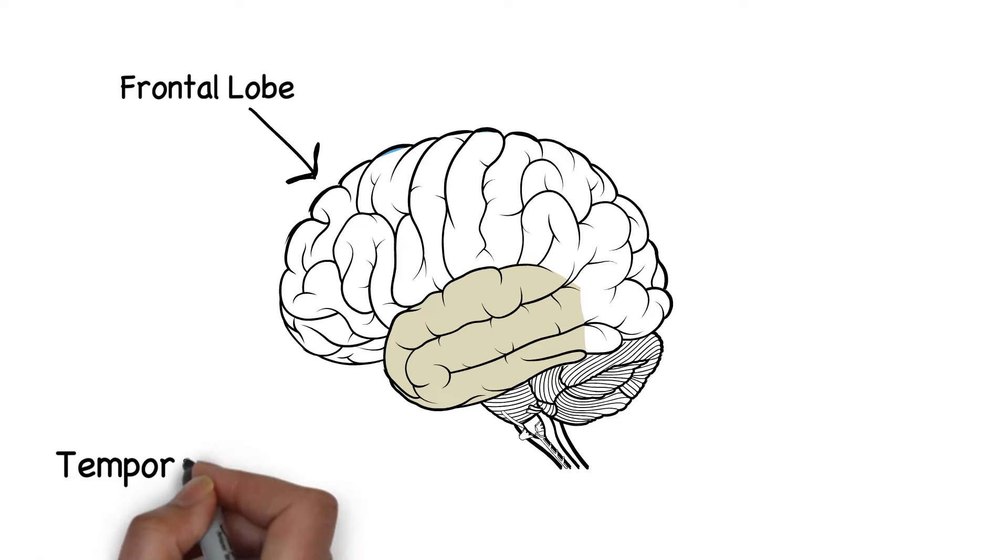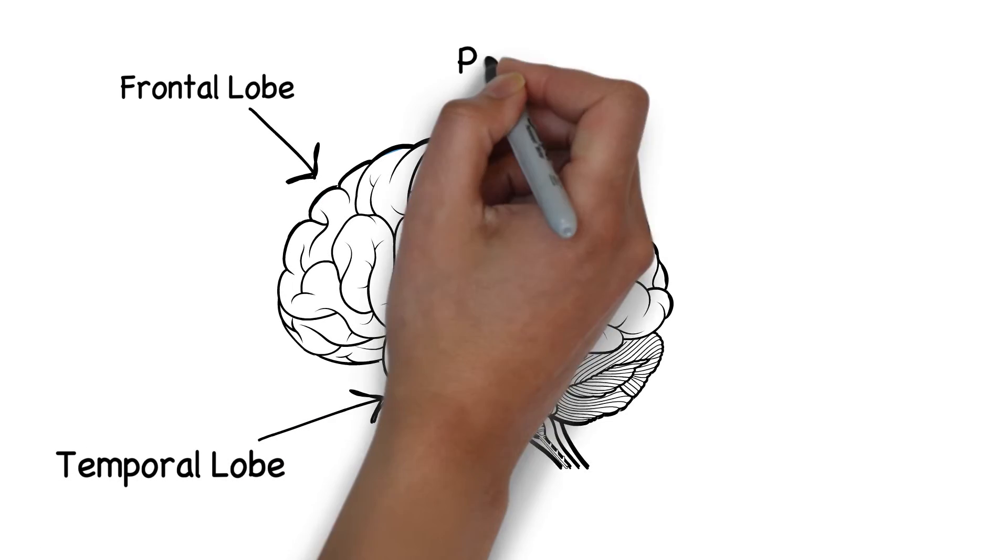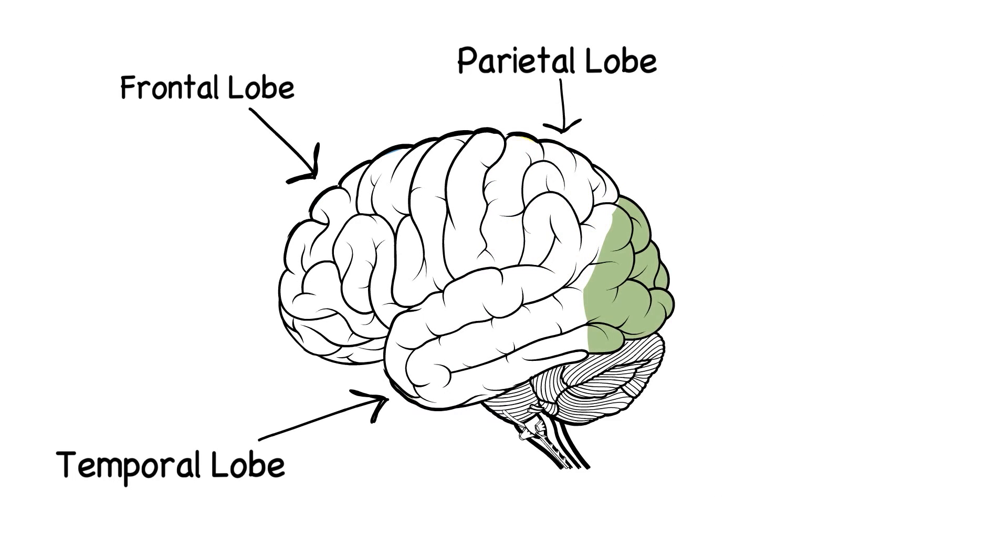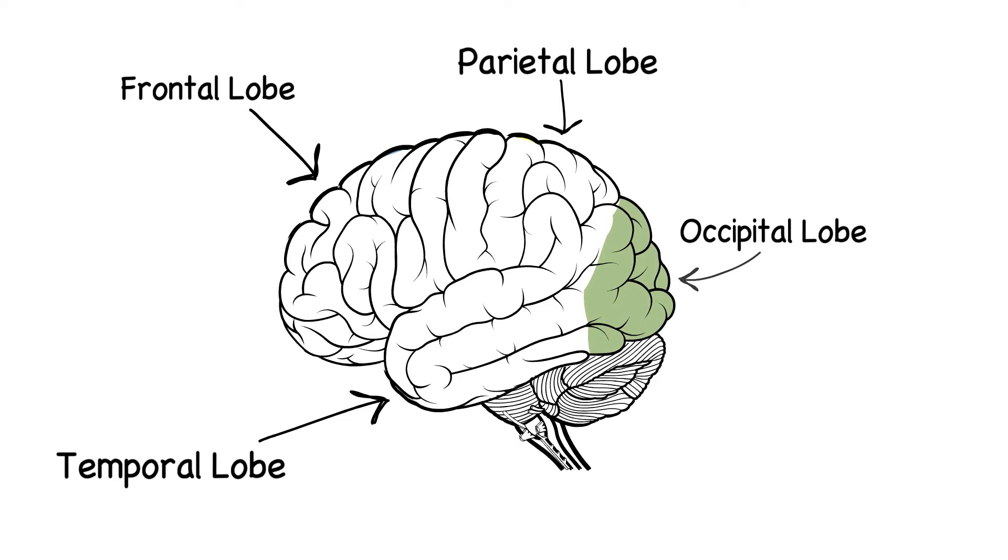Below the lateral sulcus is the temporal lobe. This is the parietal lobe. And right at the back is the occipital lobe.